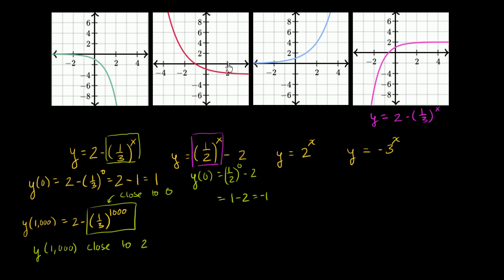As x gets larger and larger, 1 half to the x approaches 0, and so y approaches negative 2 from above. That matches this graph — when x is 0, y is negative 1, and as x increases, y approaches negative 2. As x becomes more and more negative, that's like raising 2 to a positive value, so y becomes larger and larger.